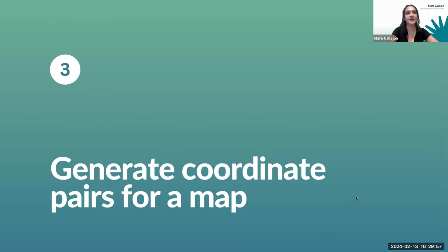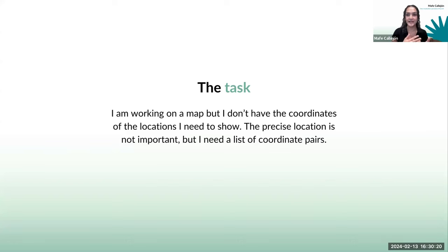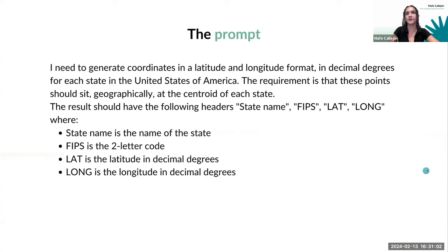Exercise number three is how to generate coordinate pairs for a map. The task is to work on a map without having precise coordinates for the locations I need to show. Very important: if the precise location is not important and you just need a list of coordinate pairs — for instance to show density or distribute points across a country — this task is super handy. But if you really require precise locations, don't generate false points; that's not the point of this session.